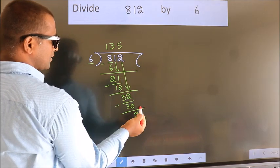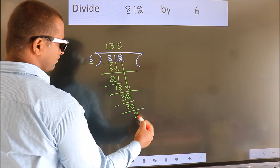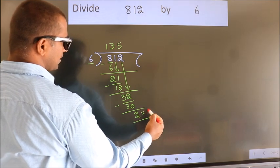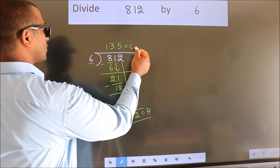No more numbers to bring it down. So, we stop here. This is our remainder. This is our quotient.